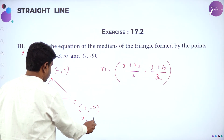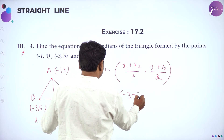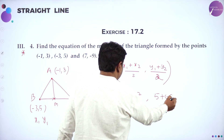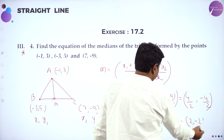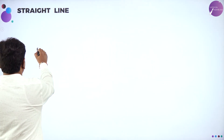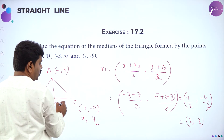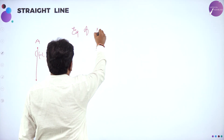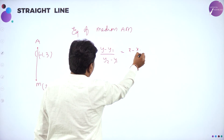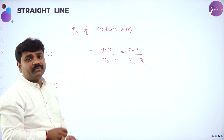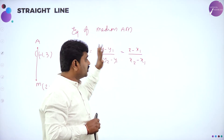Dear students, I will find one median; find the remaining by the same method. Midpoint M of BC: X-coordinate is (minus 3 plus 7) divided by 2 equals 4 by 2 equals 2; Y-coordinate is (5 plus minus 9) divided by 2 equals minus 4 by 2 equals minus 2. So M is (2, minus 2). Now we have point A as (minus 1, 3) and M as (2, minus 2). Using two-point form to find the equation of median AM.